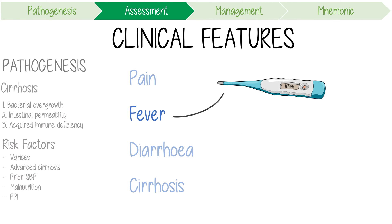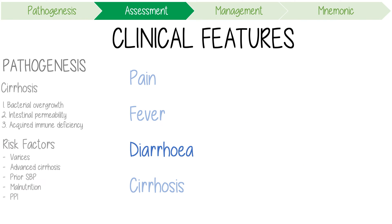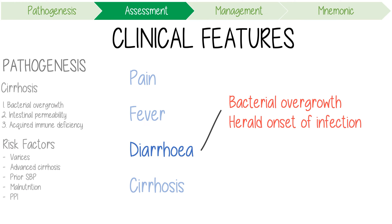Fever is the most common clinical manifestation of SBP. As people with advanced cirrhosis are usually slightly hypothermic, any increase in temperature should really be taken seriously. Diarrhea is thought to be caused by bacterial overgrowth associated with cirrhosis, and it's important to note that this might actually herald the onset of ascitic fluid infection.